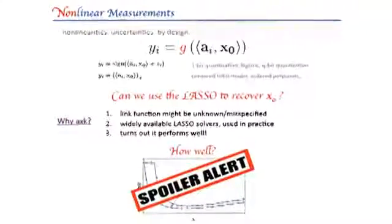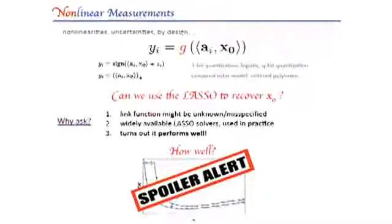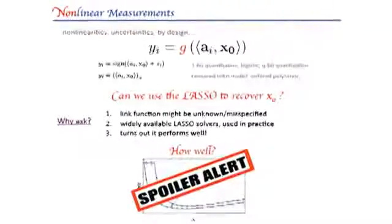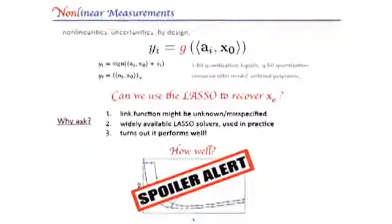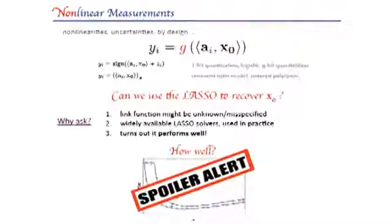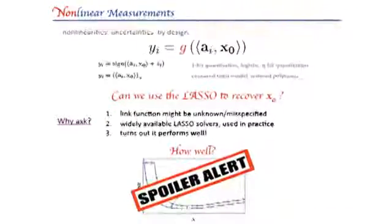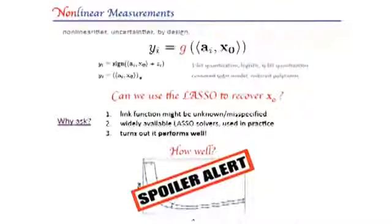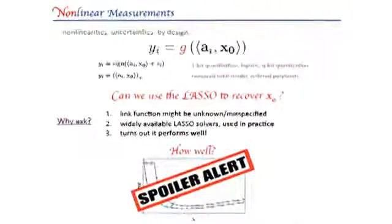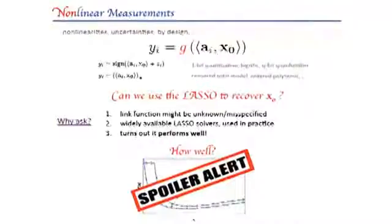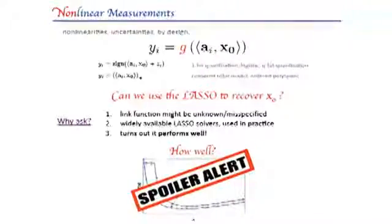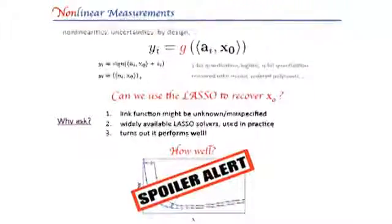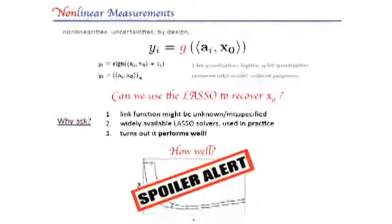So nonlinearities may arise because of uncertainties in the underlying model. So we hit this ai transpose x0 with a nonlinear function g. But more interestingly, this nonlinear function may represent some nonlinearity which arises from design. So for example, think of quantization. We may want to have one-bit measurements which are cheaper and easier to generate, and then we want to ask how do we recover x0. And so in this paper, we ask whether we can use Lasso to recover x0.